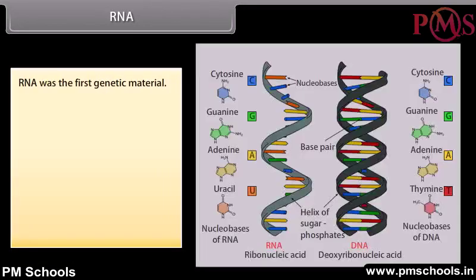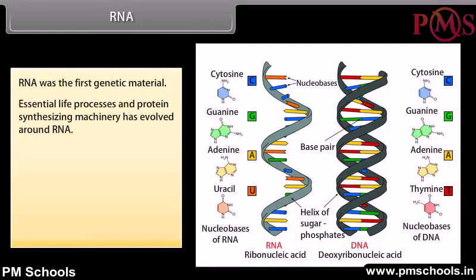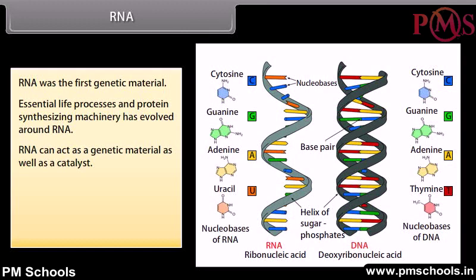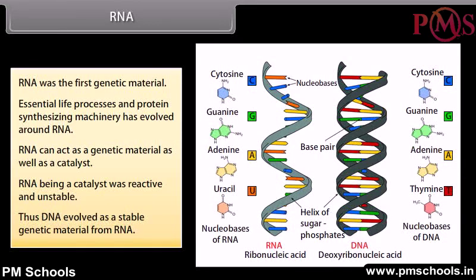RNA was the first genetic material. Essential life processes and protein-synthesizing machinery evolved around RNA. RNA can act as a genetic material as well as a catalyst. However, RNA being a catalyst was reactive and unstable. Thus, DNA evolved as a more stable genetic material from RNA.